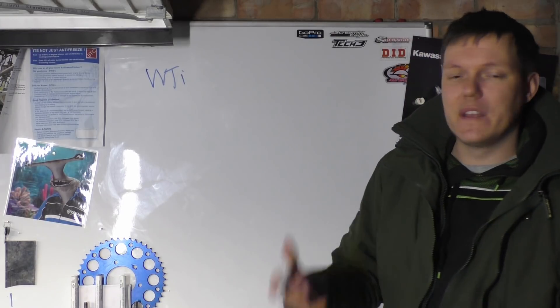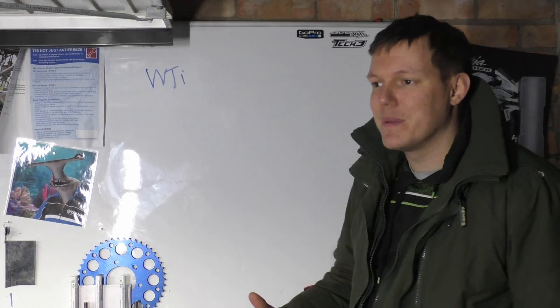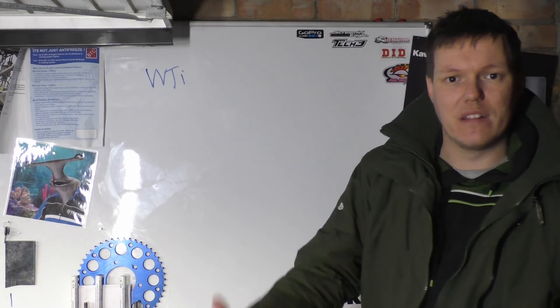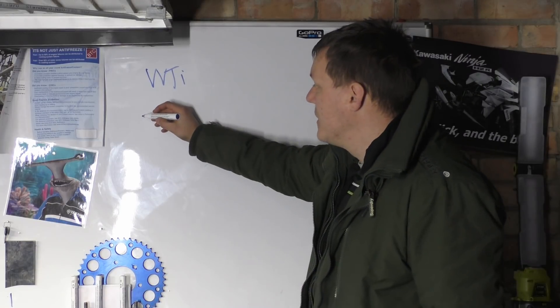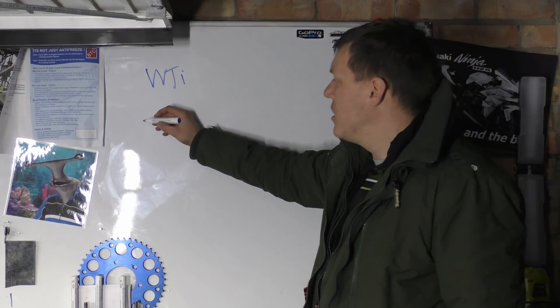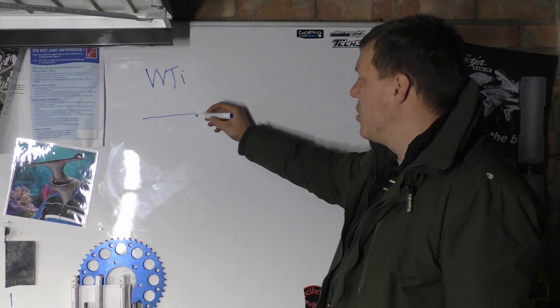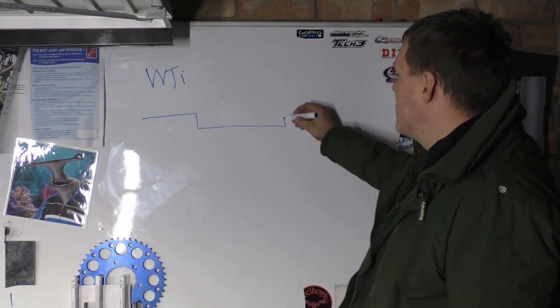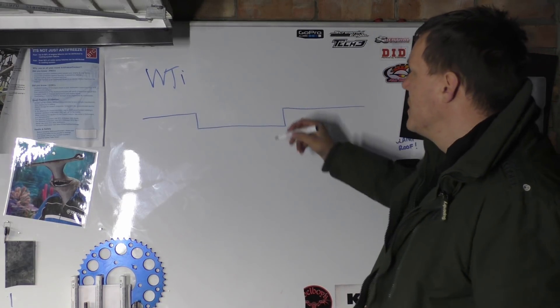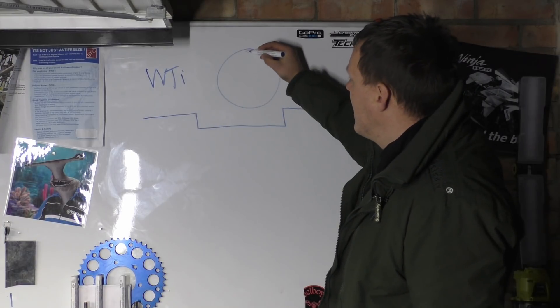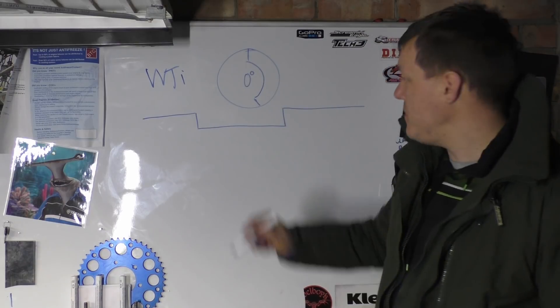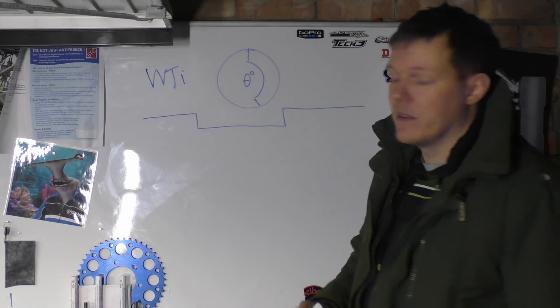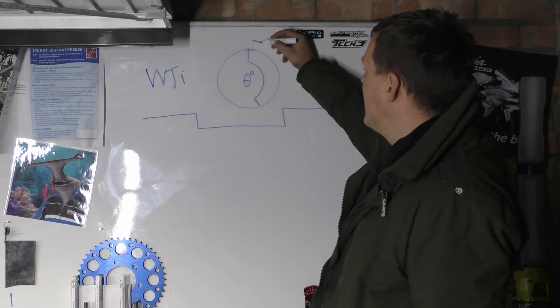So basically variable valve timing changes when the valve opens and closes compared to the crankshaft rotation. So let's just say you have a regular engine and then it'll open its valve there and then it'll close its valve there. You can also do these in circles where it'll open there and it'll close there like that. And this will be degrees. Degrees. There we go. So you'll have a duration.